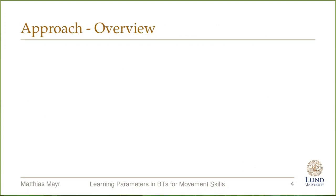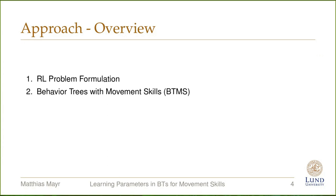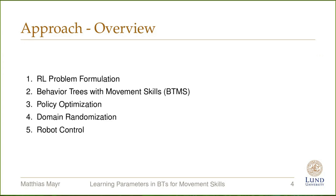In the following section, I will introduce the key components of our approach: the reinforcement learning problem formulation, the proposed robot policy consisting of behavior trees with movement skills, how the policy optimization is done, how domain randomization is integrated, and the robot control requirements and our solution.